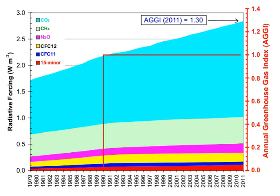Between the period 1970–2004, greenhouse gas emissions measured in CO2 equivalent increased at an average rate of 1.6% per year, with CO2 emissions from the use of fossil fuels growing at a rate of 1.9% per year.